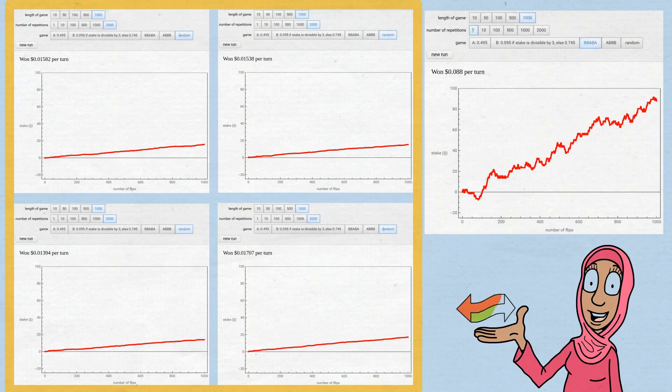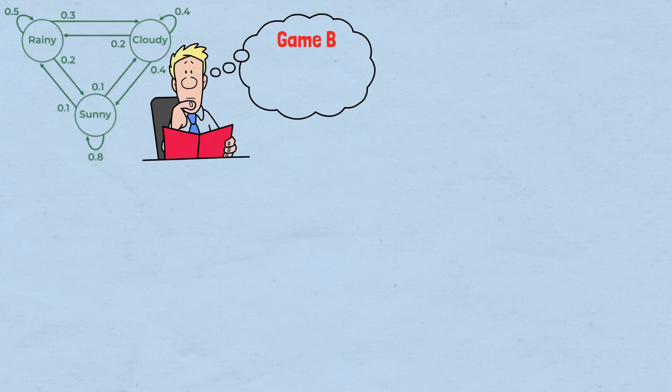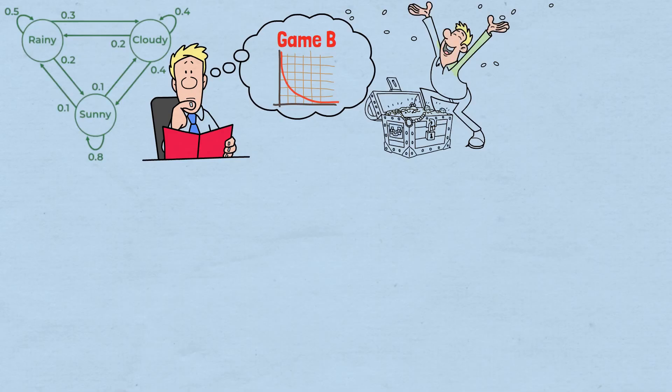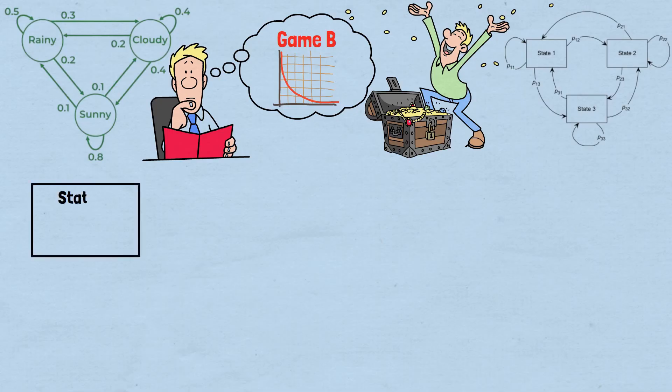To fully understand Parrondo's Paradox, we need to examine the Markov chain analysis that reveals why Game B alone is a loser, but Game B alternated with Game A becomes a winner. Game B operates as a three-state Markov chain based on your money modulo three—the remainder when divided by three. Your money can be in one of three states: State zero—amount is a multiple of three, play B1 with 10% win rate. State one—amount is one more than a multiple of three, play B2 with 76% win rate. State two—amount is two more than a multiple of three, play B2 with 76% win rate.